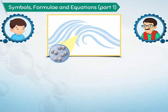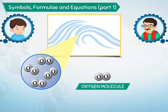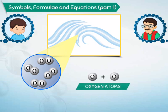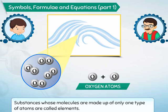Oxygen gas is made up of oxygen molecules. Each oxygen molecule has two oxygen atoms. Such molecules which are made up of only one type of atoms are called elements.